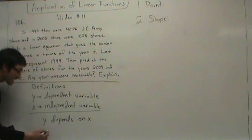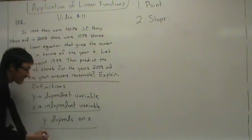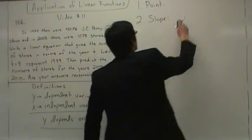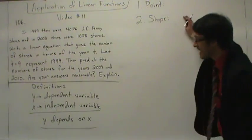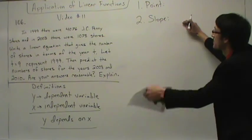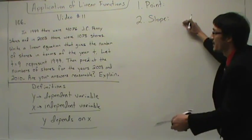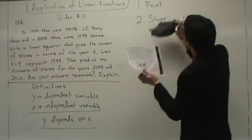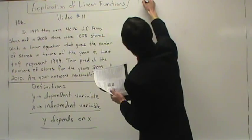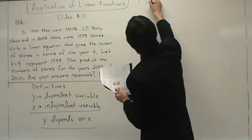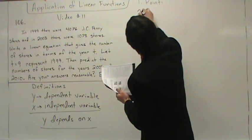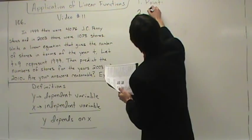So Y depends on X. This is our phrase — this is our key phrase. It's going to allow us to find a point and a slope to be able to work this problem. So: point and slope.